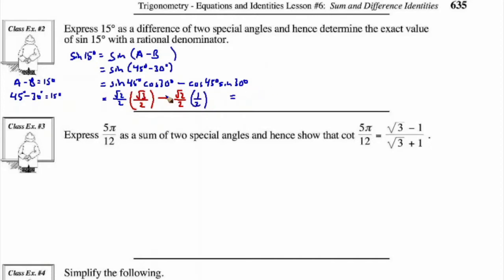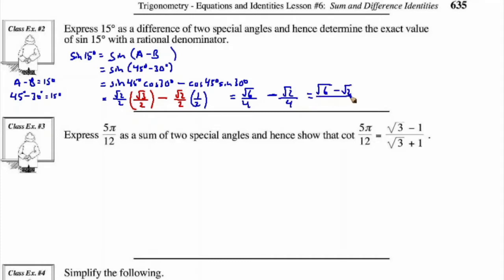When we simplify this, we have root 2 times root 3, which is root 6, over 2 times 2, which is 4. And we have minus root 2 over 2 times 2, which is 4. So the end result is root 6 minus root 2 over 4.